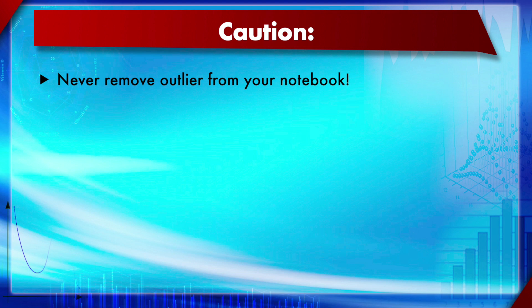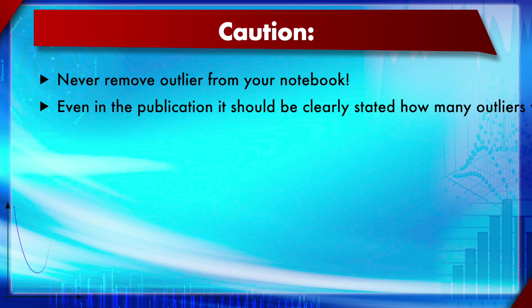The caution is: never remove outliers from your lab notebook. The raw data must be preserved and should contain the outlier. If you remove or erase the outlier from your notebook, that constitutes data manipulation, which is a serious academic offense. Even in publications, it should be clearly stated how many outliers were removed from the data set and what criteria were used to identify them.